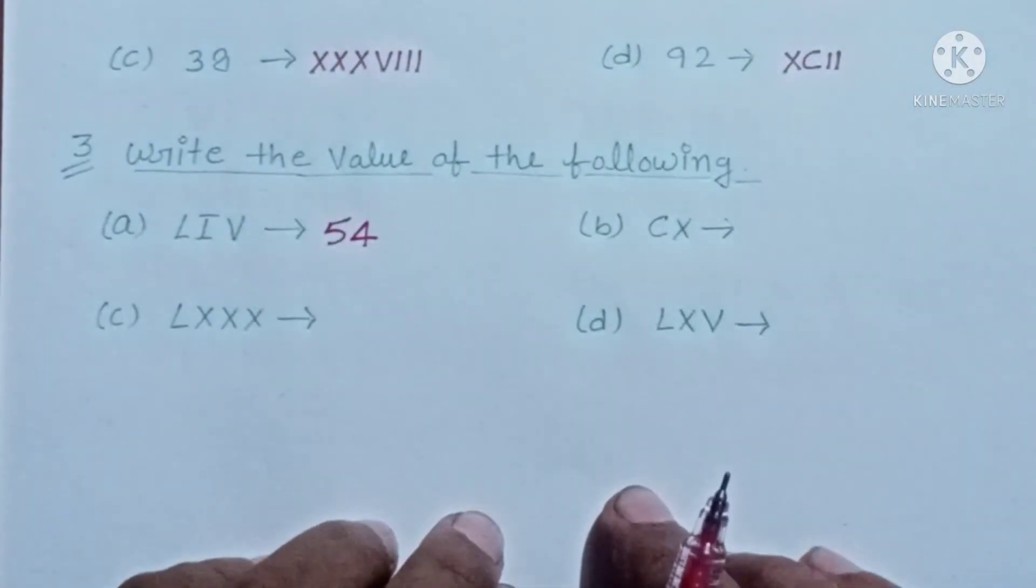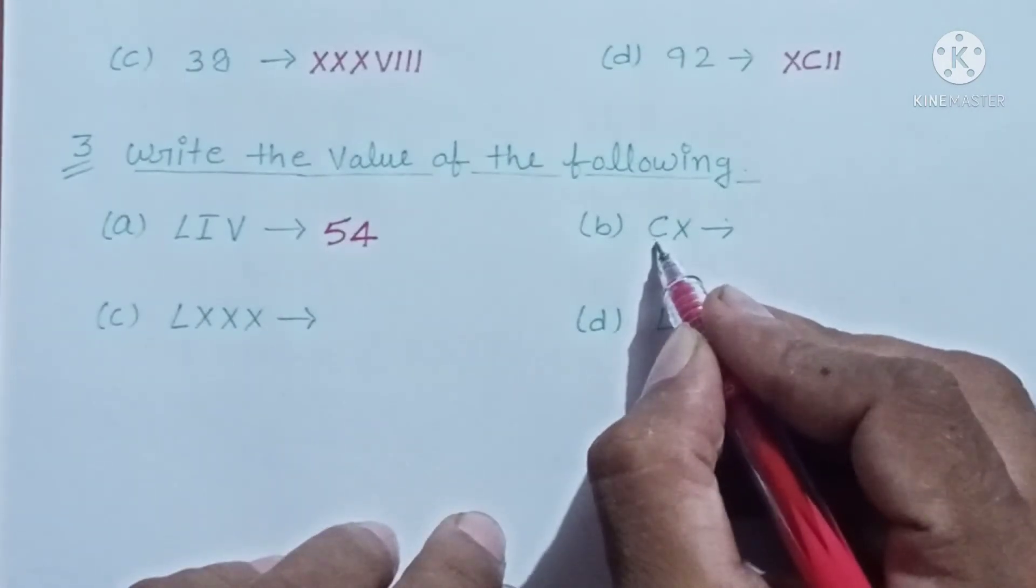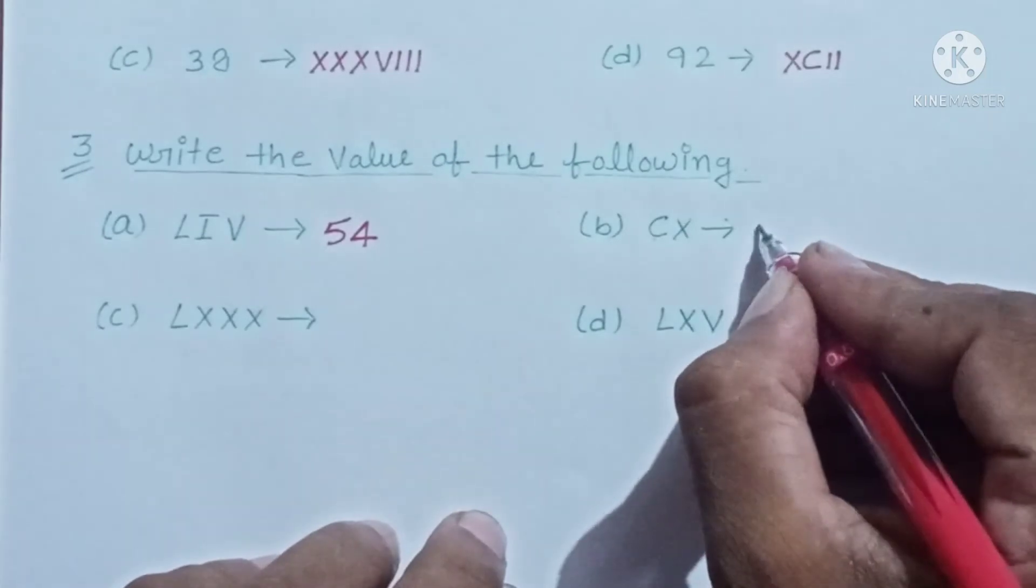Similarly, next B: CX. C for 100, X for 10, means 110. Its value is 110.